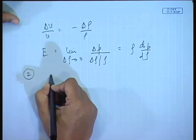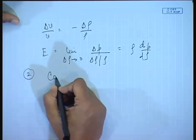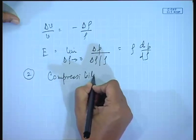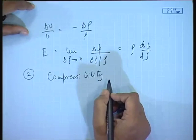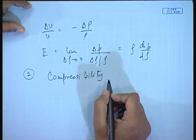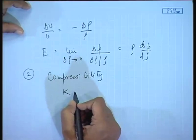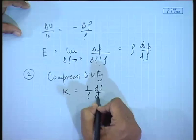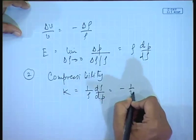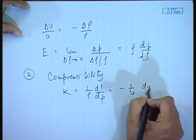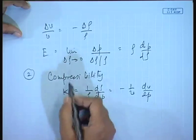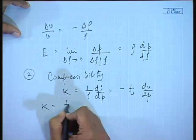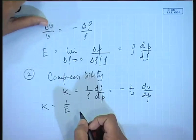We prefer to define it in terms of compressibility κ, which is nothing but (1/ρ)(dρ/dP), or equivalently -(1/V)(dV/dP). Comparing these two definitions, you can understand that κ is equal to 1/E.